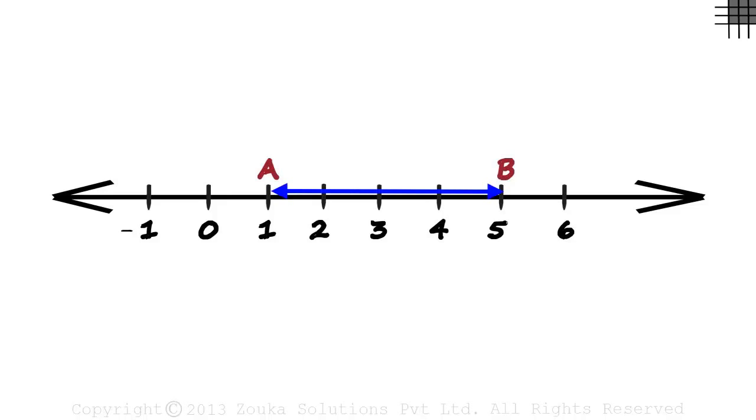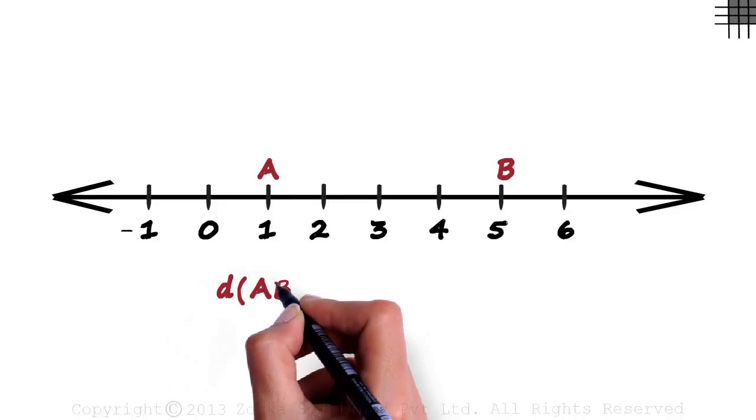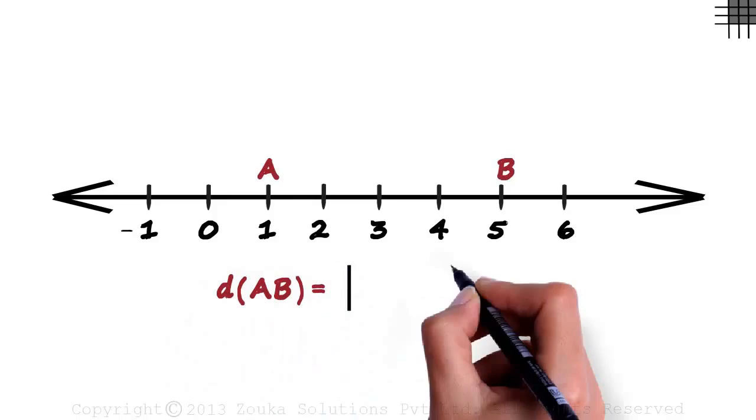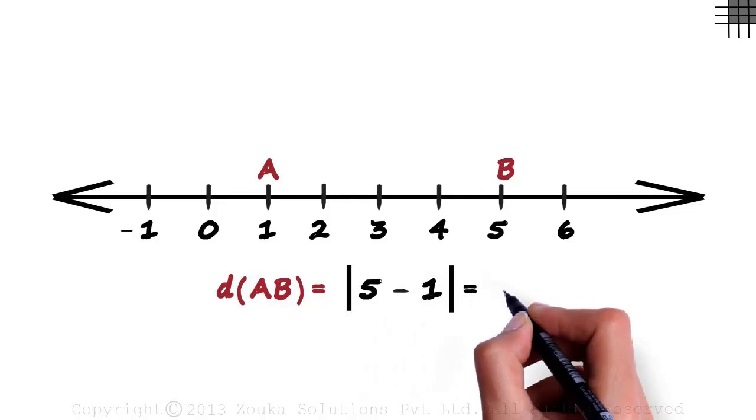How do we find the distance between points A and B here? Look at the numbers under points A and B. It's one and five. The distance between points A and B equals absolute value of five minus one, which equals four.